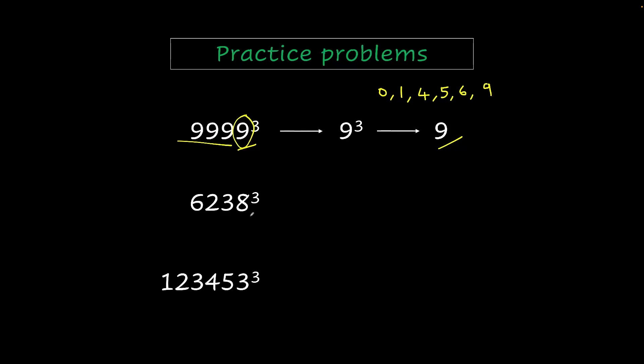And for 6238 cube we have to look at 8 cube. Now as we know the second pattern tells us that digits 2 and 8 swap. So 8 cube will end with a 2. As simple as that.